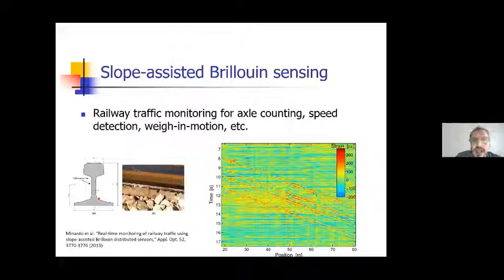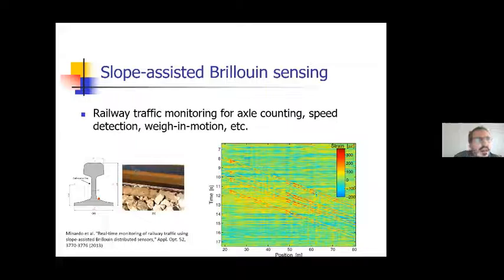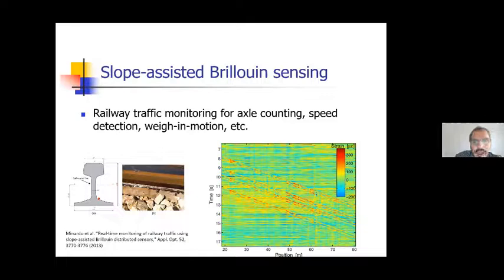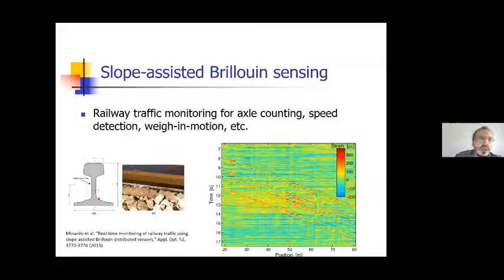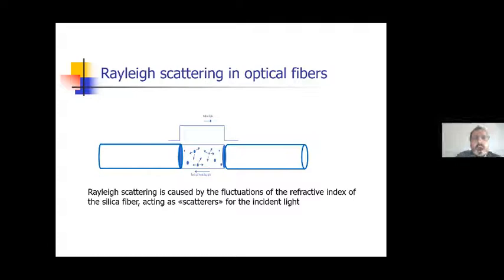In this way, we have demonstrated we can do axle counting, speed detection, and we can estimate the weight of the train and so on. Still, we should underline that Brillouin scattering is not suitable for vibration measurement. By vibration we mean dynamic strain measurement with very low levels of strain, on the order of a nanostrain. In the case of a Brillouin measurement, we are still limited to strain on the order of a microstrain. As an alternative, we can employ Rayleigh scattering.